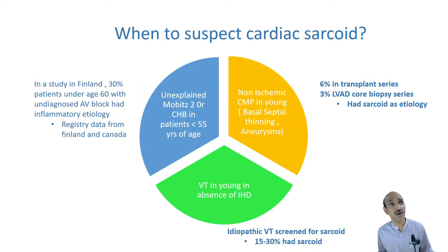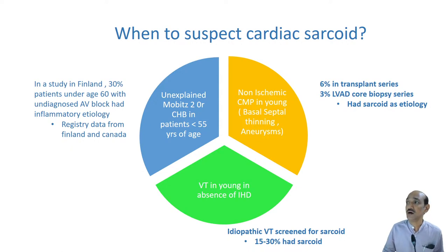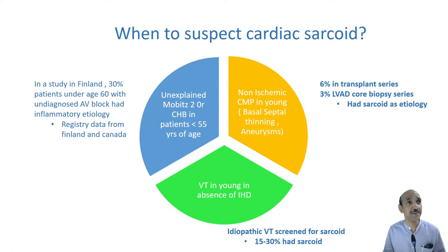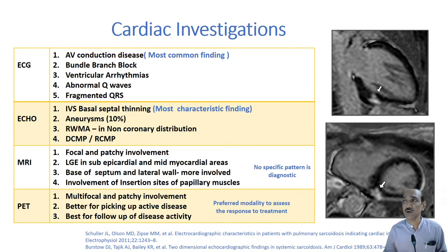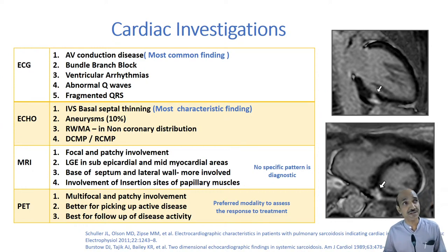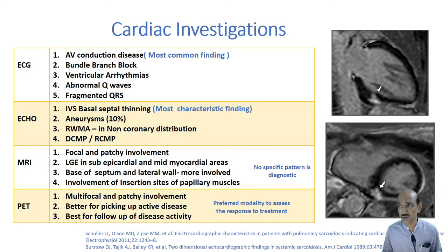When to suspect cardiac sarcoid in a patient not known to have sarcoidosis: unexplained complete heart block in young people, VT in young patients in the absence of coronary artery disease, and ischemic and severe LV dysfunction in the absence of other known causes. Up to 6% of patients going for cardiac transplant had cardiac sarcoidosis. On ECG, look for blocks, ventricular ectopy, and fragmented broad QRS segments. On echo, a very characteristic but not very sensitive finding is septal thickening at the base of the interventricular septum; aneurysms, regional wall motion abnormalities not in typical coronary distribution, and unexplained dilated cardiomyopathy.